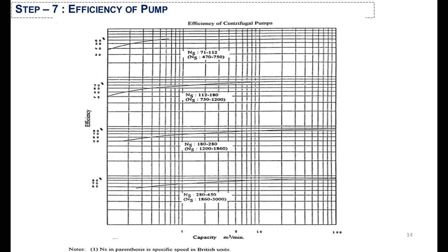In the seventh step, you will assess the efficiency of the pump. The efficiency of a pump depends upon the specific speed of the pump against its capacity. For a constant capacity, as the speed of the pump increases, its efficiency increases. You can analyze your relevant case using the chart to estimate the pump efficiency.